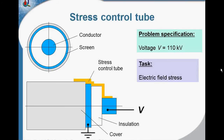Another problem with the electric field stress distribution is the case when you terminate the cable. Normally the electric field stress is distributed inside the insulation, but when you terminate the cable to connect it to terminals, you remove the cover, you remove the screen, you remove the insulation and connect the cable to the terminals. And in this place, high electric field stress occurs.